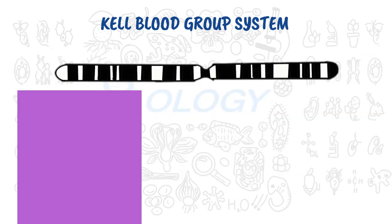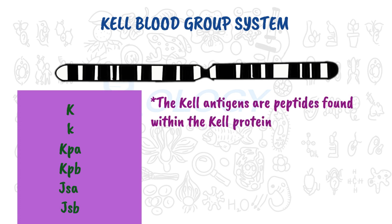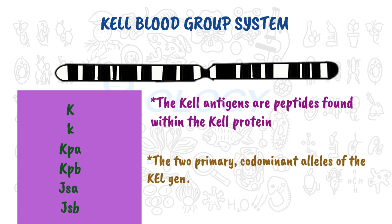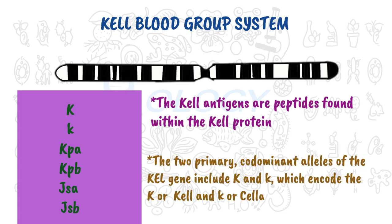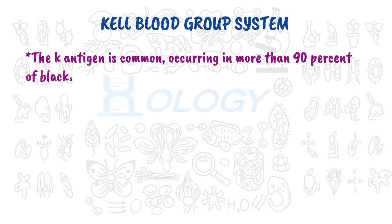The Kell antigens are K, k, Kpa, Kpb, Jsa, and Jsb, all of which are encoded by the Kel gene. The Kell antigens are peptides found within the Kel protein. The two primary codominant alleles of the Kel gene include K and k, which encode the capital K (Kel) and small k (Cellano) antigens respectively. The k antigen is common, occurring in more than 90 percent of blacks and whites.